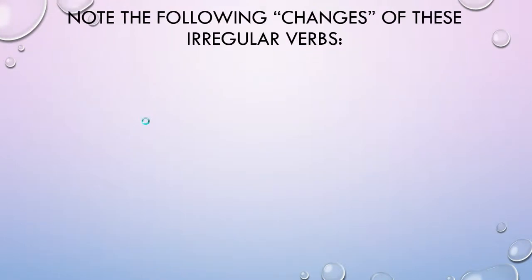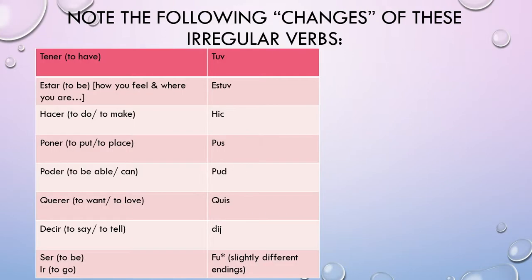Here is a list of some of the irregular verbs that you all learned in Spanish 2. Keep in mind that there are other verbs, but these are the ones that you are responsible for. TENER is going to completely change to TUV. ESTAR changes to ESTUV.